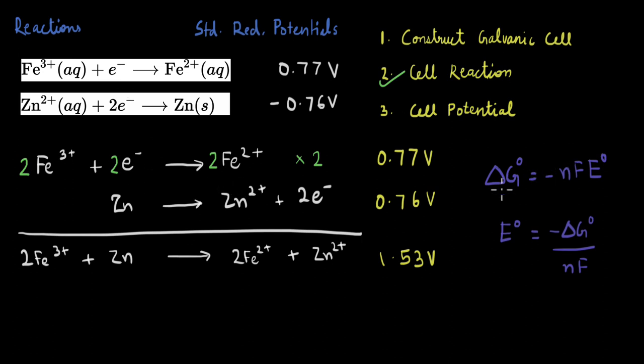So if you rearrange this, you get E0 to be minus delta G0 divided by Nf. You can see here how when we calculate the potential, it is on a per charge transferred basis. So the coefficient that we use to multiply is already accounted for in the denominator here. So these values of E0 that are reported already include this factor, which is why we don't multiply this potential by 2 when we multiply this reaction by 2.